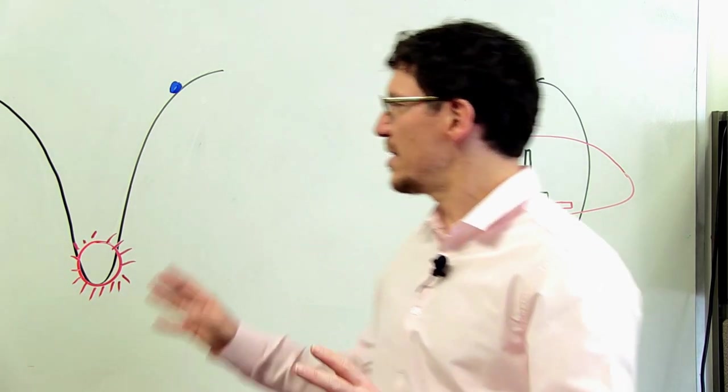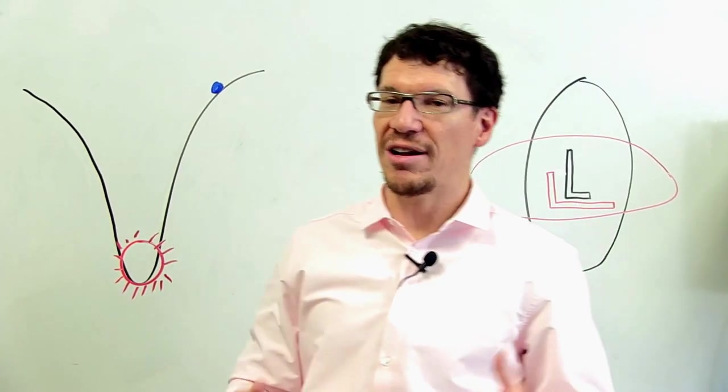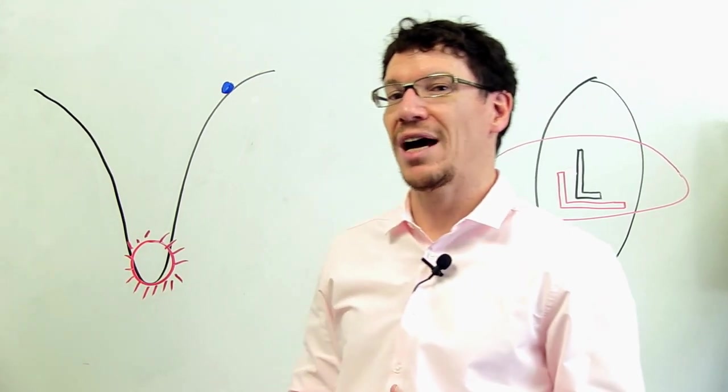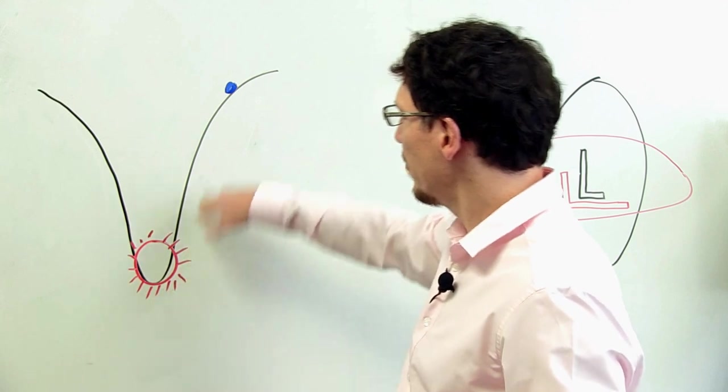And so what happens is if we draw a schematic diagram here of our solar system, here we have the sun. And the sun is a very massive object. It weighs about 300,000 times the mass of the Earth.